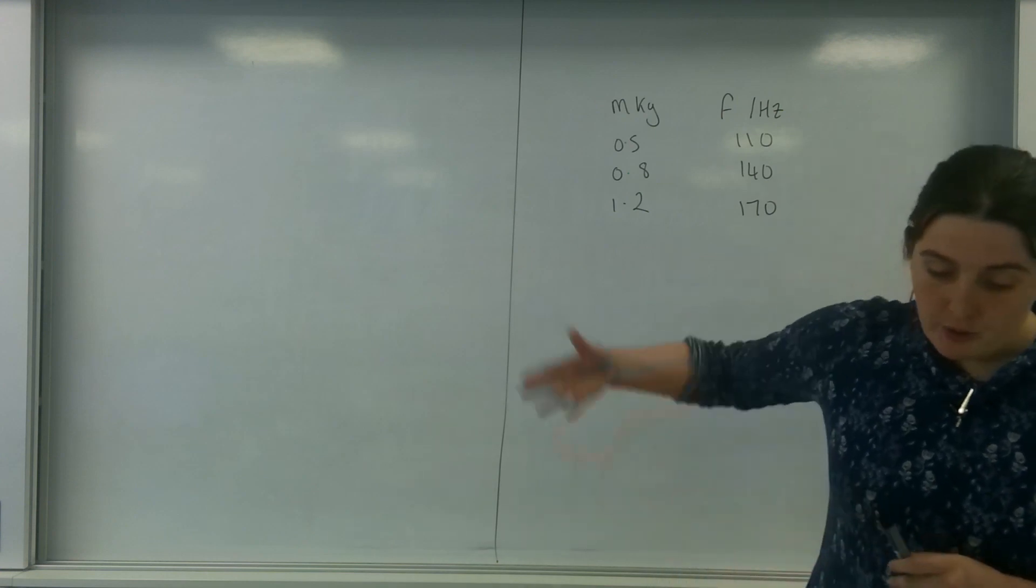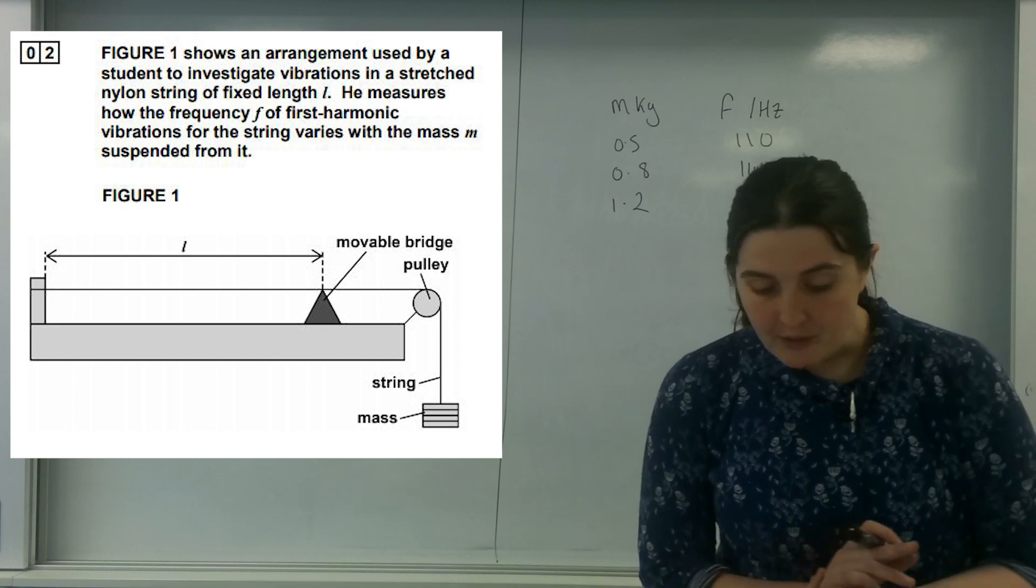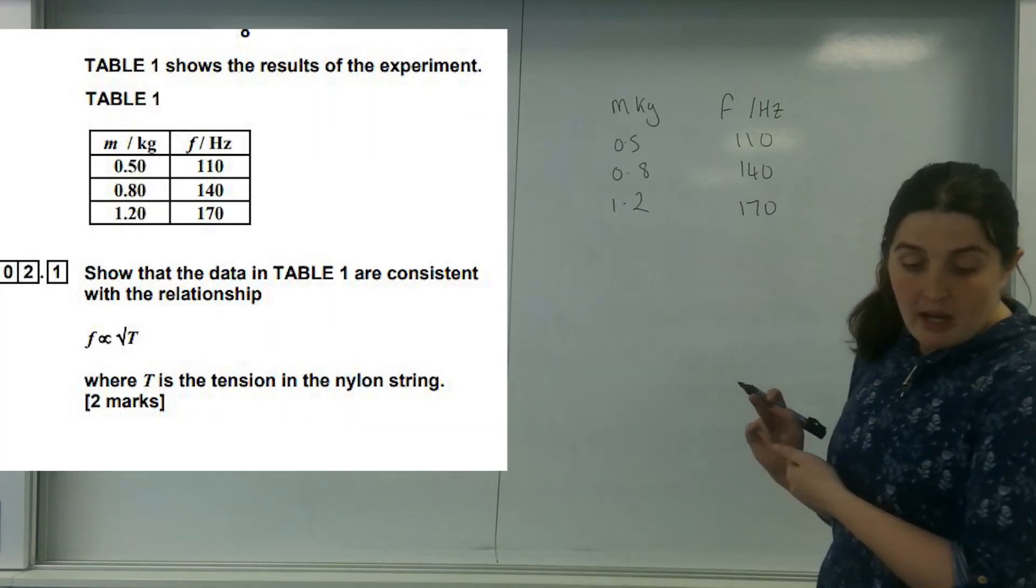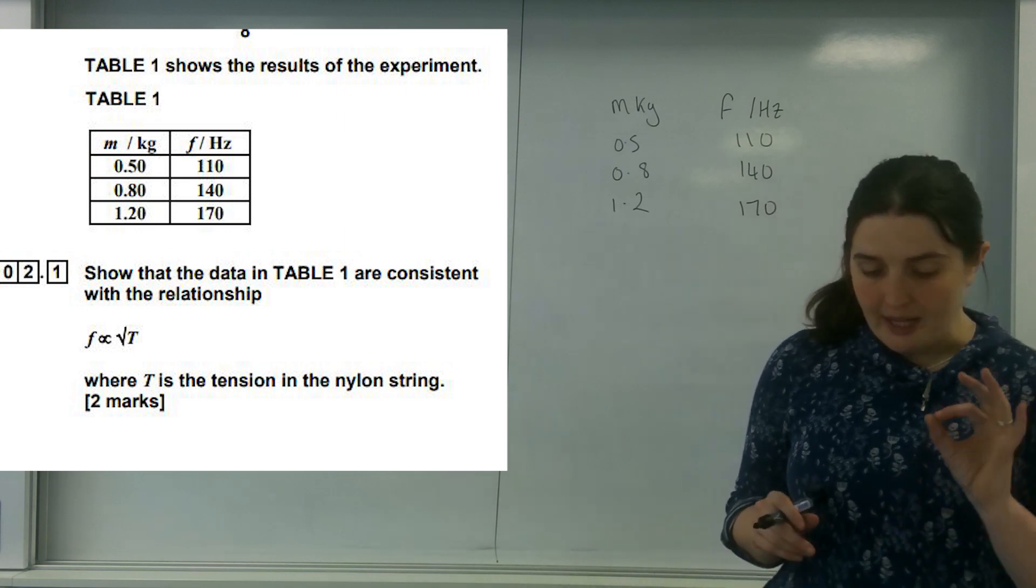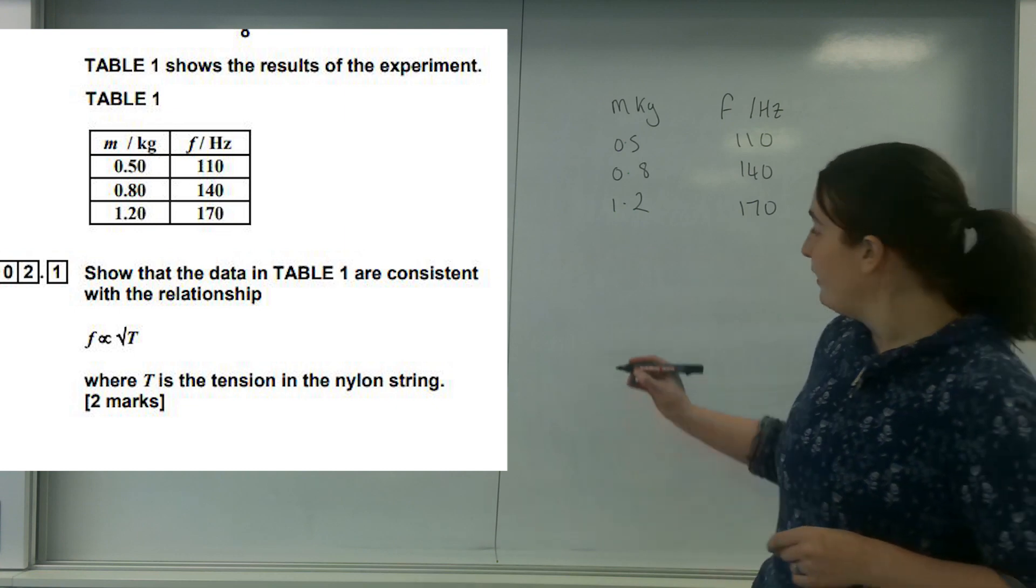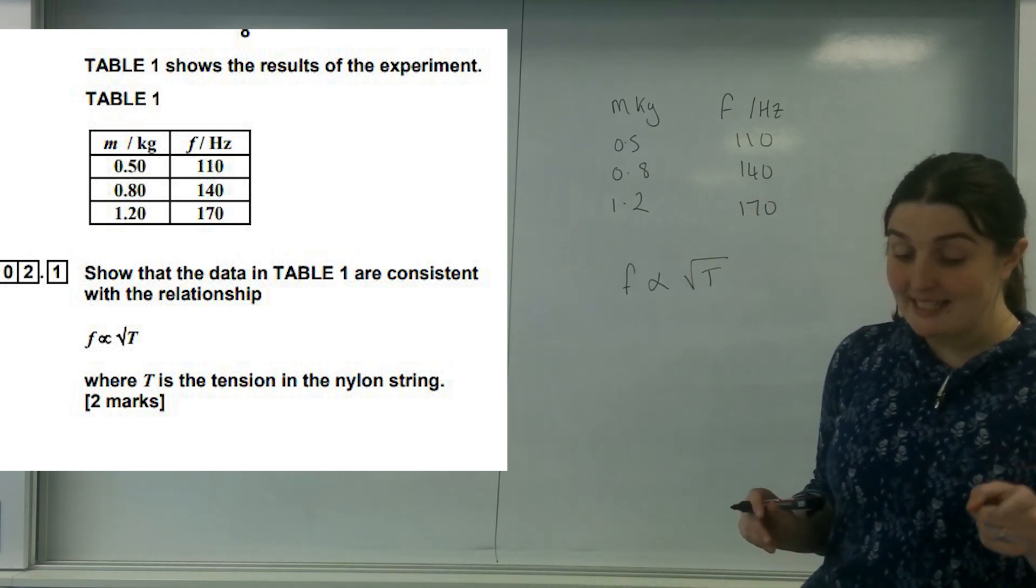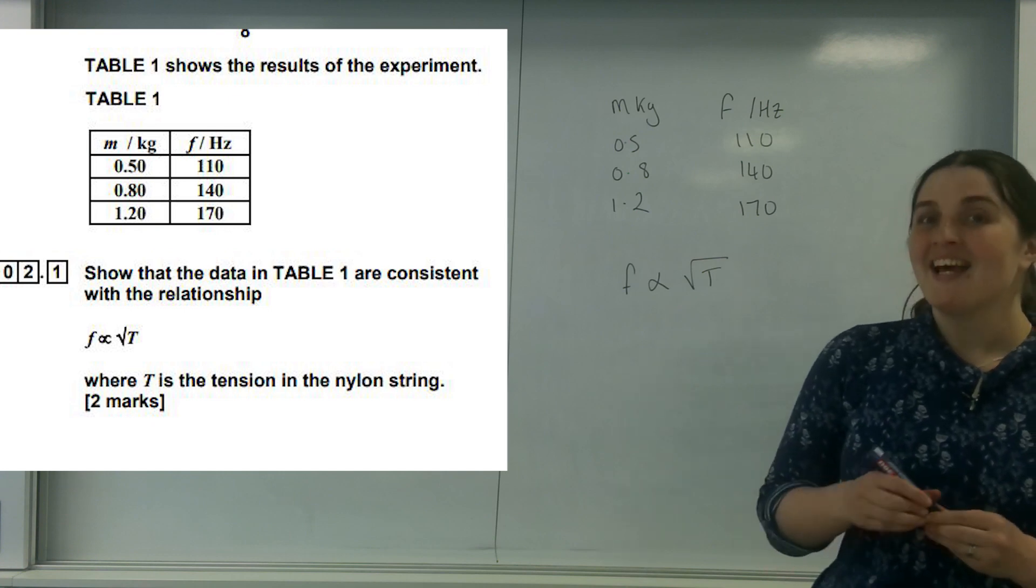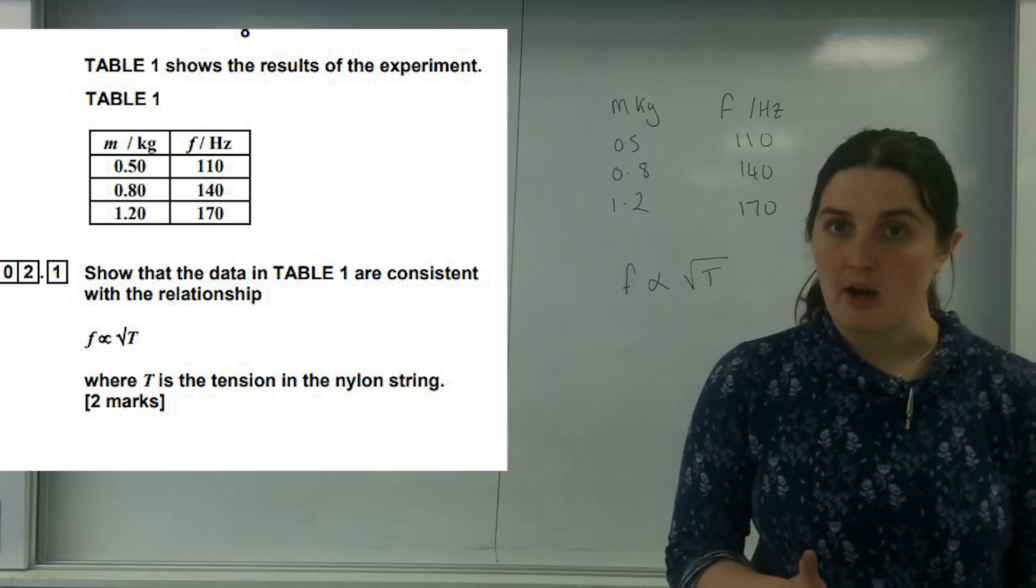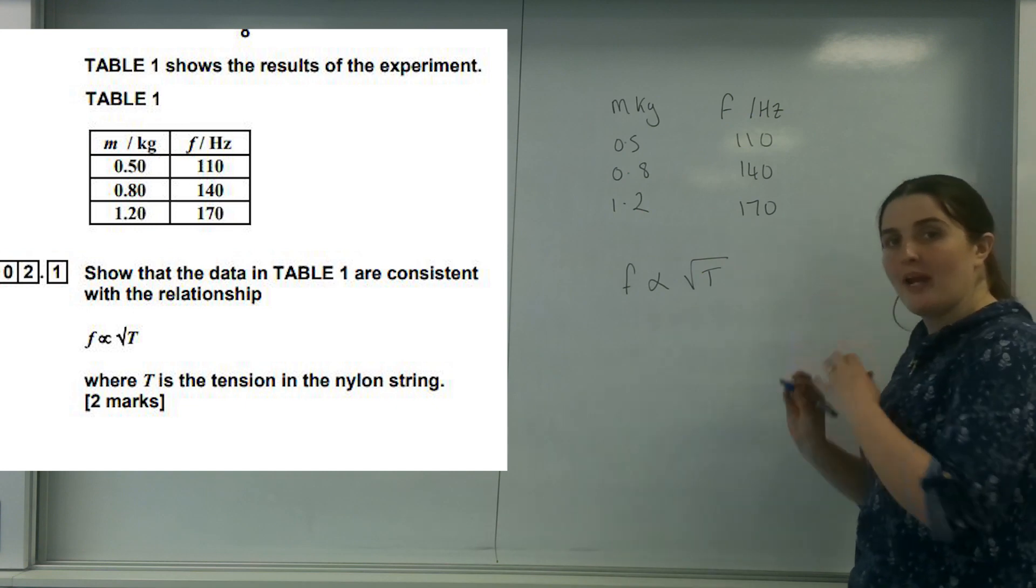Figure 1 shows an arrangement used by a student to investigate vibrations in a stretched nylon string of fixed length L. He measures how the frequency f of the first harmonic vibrations varies when different masses are applied. Table 1 shows the results of the experiment. Question 2.1: Show that the data in TABLE 1 are consistent with the relationship f is proportional to the square root of T, where T is the tension in the string.